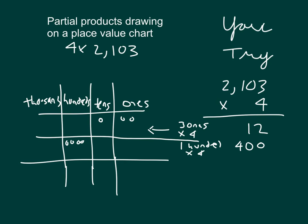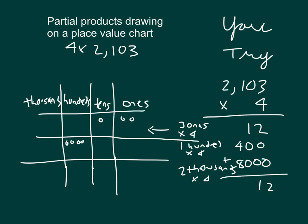Finally, on the last part of our partial products drawing on the place value chart, we're looking at four times the two, and the two being worth thousands. So that's two thousands times four, which is eight thousands. And of course, if we add those carefully, we get our answer of eight thousand four hundred twelve — eight thousand within our place value chart, modeled with disks. We can record our number: two, one, four, eight — or eight thousand four hundred twelve.